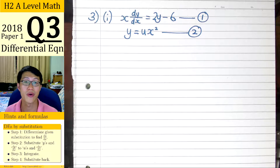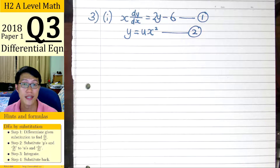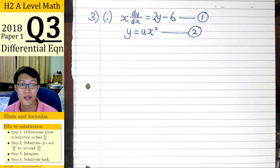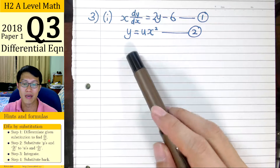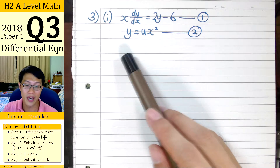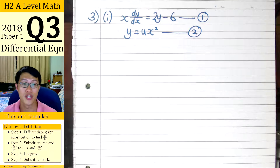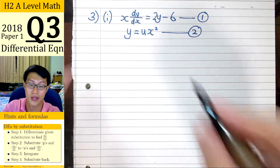For question 3, we are required to use substitution to transform a given differential equation. Recalling the steps to doing that, the first step is to differentiate the given substitution. In differential equations, we often end up with three variables — y, u, and x — so we have to perform our differentiation using implicit differentiation.